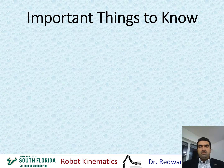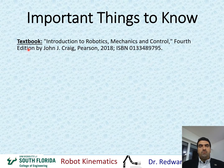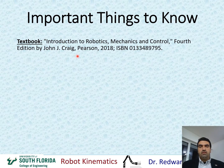I'd like to talk about a few important things to know or prepare ahead of time before you start this course. The textbook is Introduction to Robotics, Mechanics, and Control, fourth edition by John Craig, and the ISBN number is shown here. You can find it on Amazon or any other bookstore of your choice.